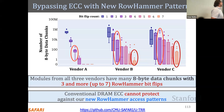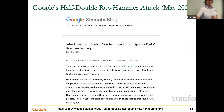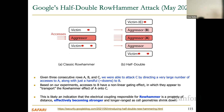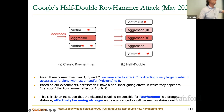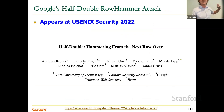Google introduced the half-double attack, showing that a far aggressor hammered many times combined with a near aggressor hammered very few times can cause errors in an intermediate victim row. What makes this particularly interesting is that the defense mechanism itself becomes an attack — if you're hammering the far aggressor, the defense refreshes the near aggressor, which then acts as the attack row. Your defense mechanism needs to account for this as well.